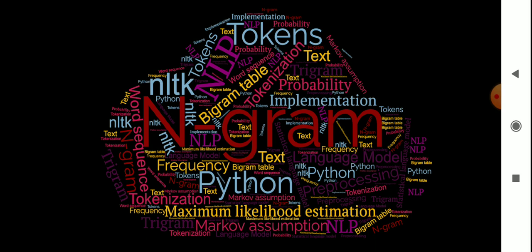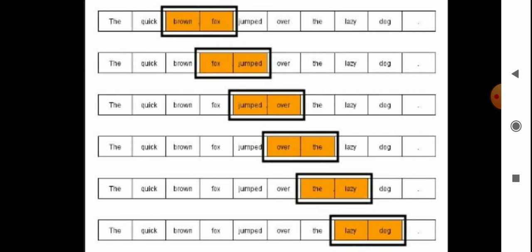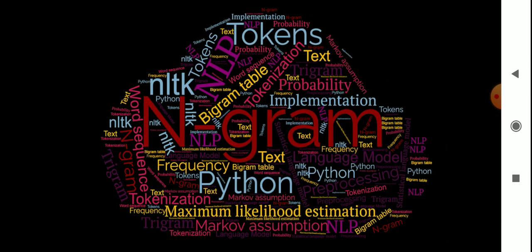There are two types of language modeling methods. Number one is statistical language modeling, and number two is neural language modeling. In this video, we will discuss about n-gram.